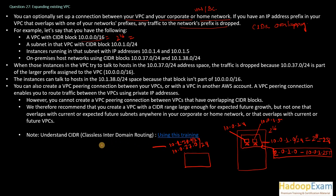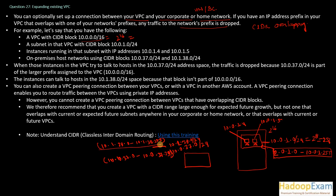The on-premises network can support 256 addresses each. The IP range for 10.1.38.0/24 would be 10.1.38.0 to 10.1.38.255, and the IP range for 10.0.37.0/24 would be 10.0.37.0 to 10.0.37.255. These are the two on-premises host network CIDR ranges.